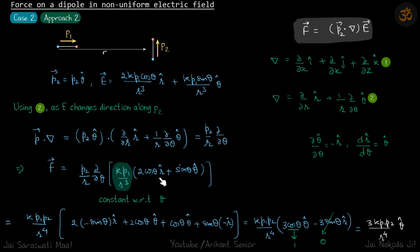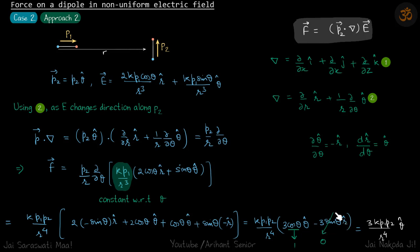Taking 2k·p1/r³ out: the first term gives 2(−sinθ)r-cap + 2cosθ·θ-cap, and the second term gives cosθ·θ-cap + sinθ·(−r-cap). Adding similar terms together, we get: 3k·p1·p2 / r⁴ · (3cosθ θ-cap − 3sinθ r-cap). This is a general equation — we have not specified θ yet.